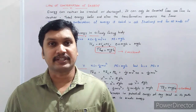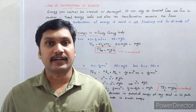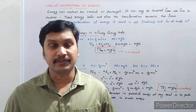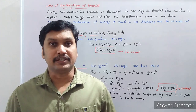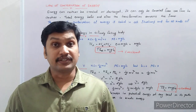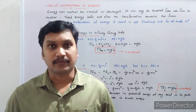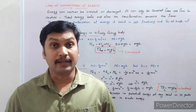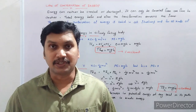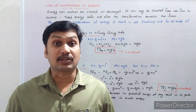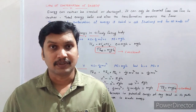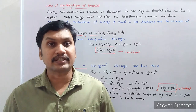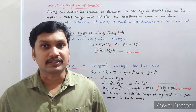Hello students, welcome to physics class. Today we discuss the law of conservation of energy. In the last session we learned there are different types of energy, and energy is the ability to do work. Energy can convert from one form to another, but we can never destroy energy. Even though we can convert one form of energy into another, we cannot destroy or create energy — we can only transform one form of energy into another.